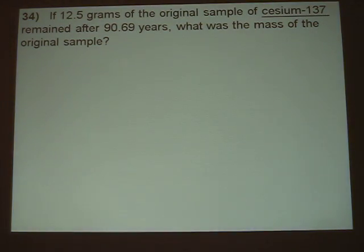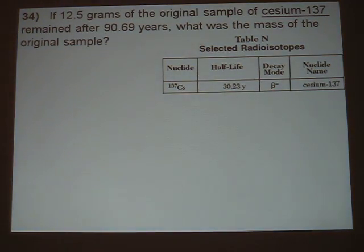Since they mentioned cesium-137, we should check to see that it's in Table N. There it is, and we look up its half-life and we see it's 30.23 years.